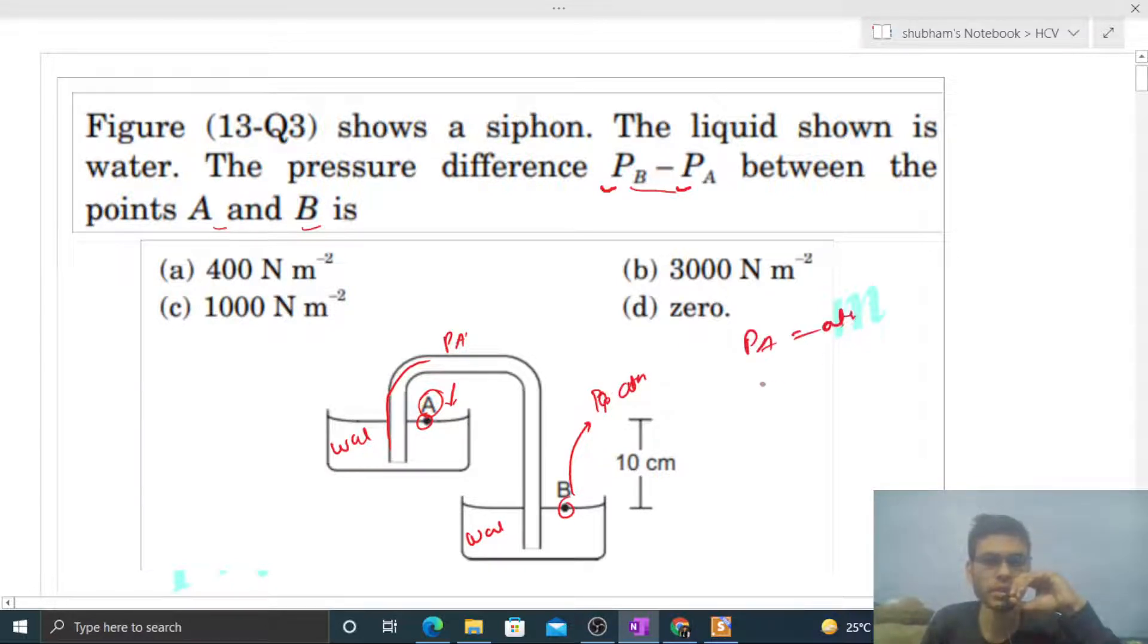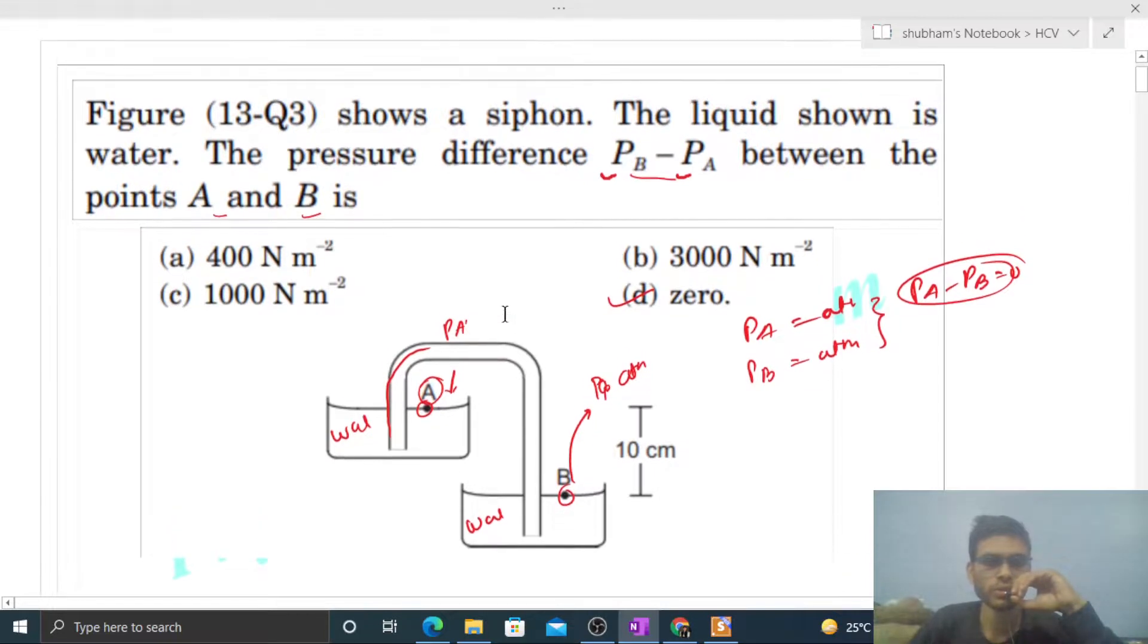atmospheric pressure and point B also has atmospheric pressure. So the pressure difference, that is Pa minus Pb, that will be zero. Now you can see that this siphon, why is it placed here? It's just placed to confuse you.